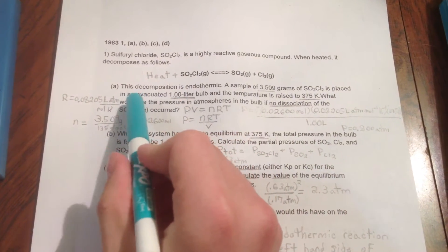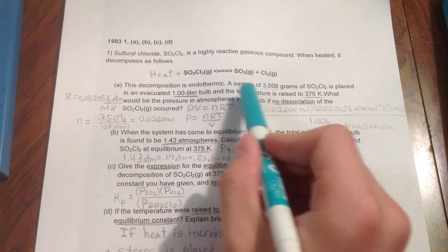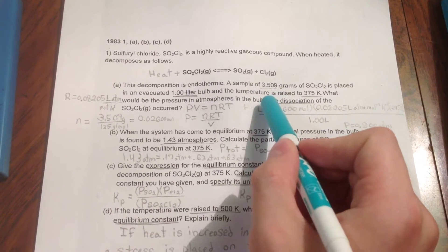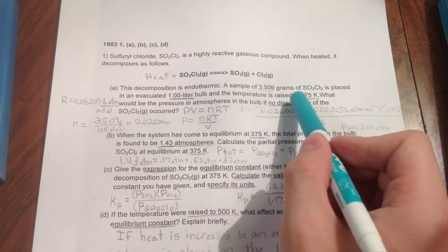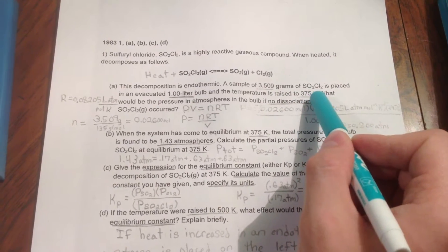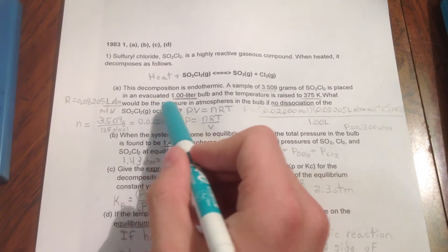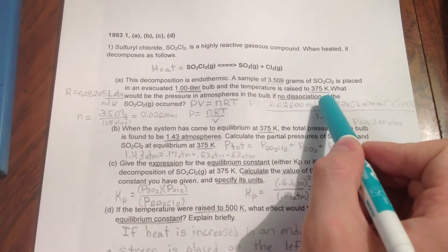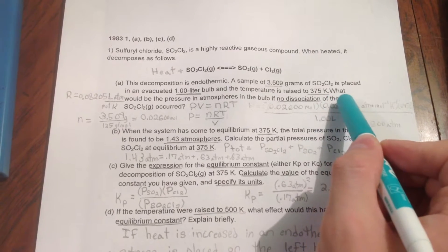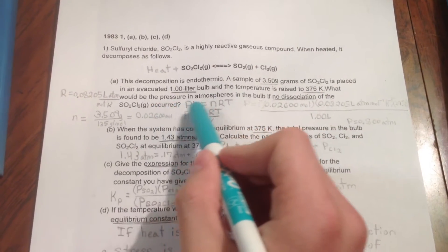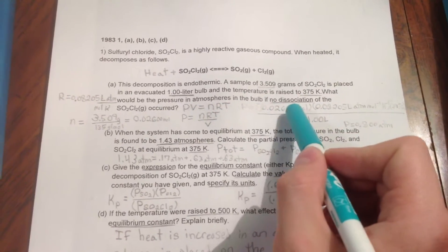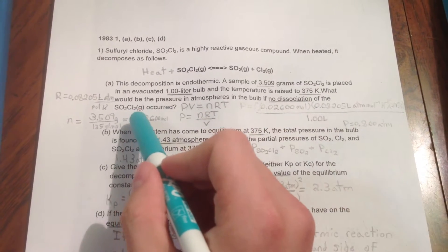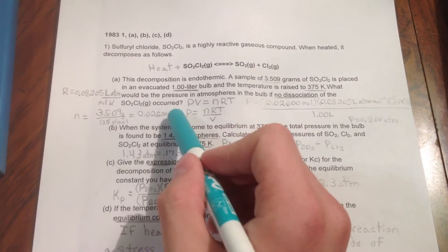Part A. This decomposition is endothermic. A sample of 3.509 grams of SO2Cl2 is placed in an evacuated 1 liter bulb at the temperature 375 degrees Kelvin. What would be the pressure in atmospheres in the bulb if no dissociation of the SO2Cl2 gas occurred?